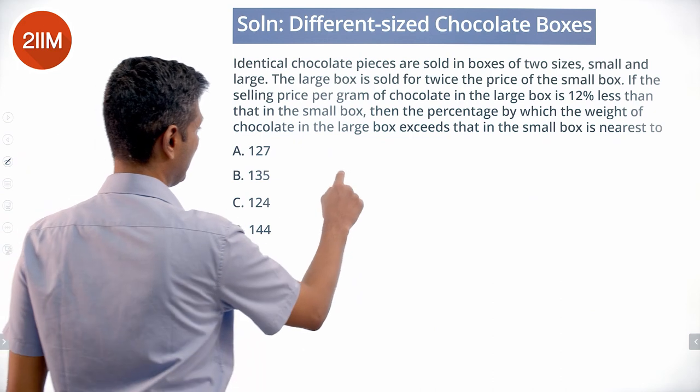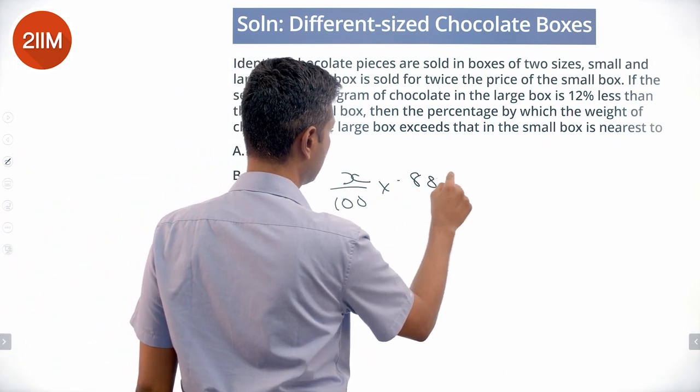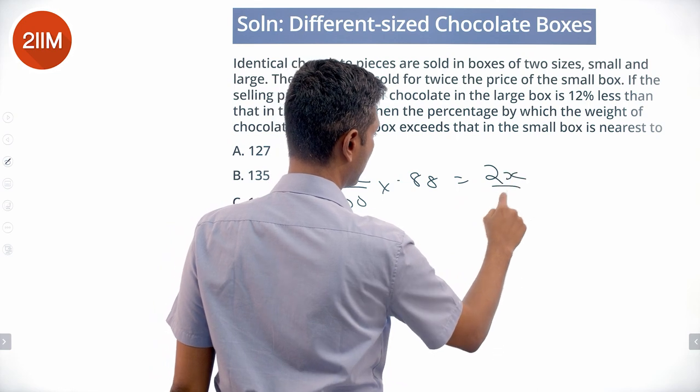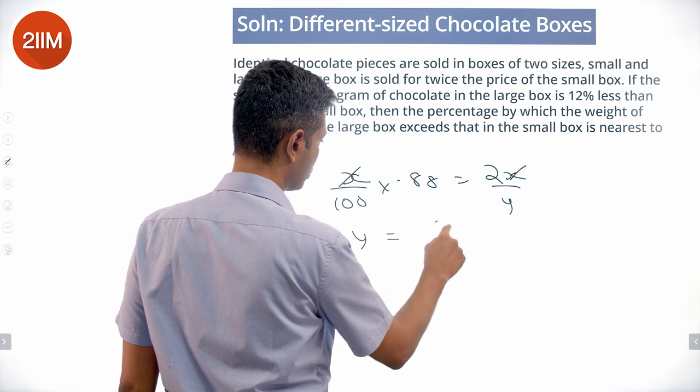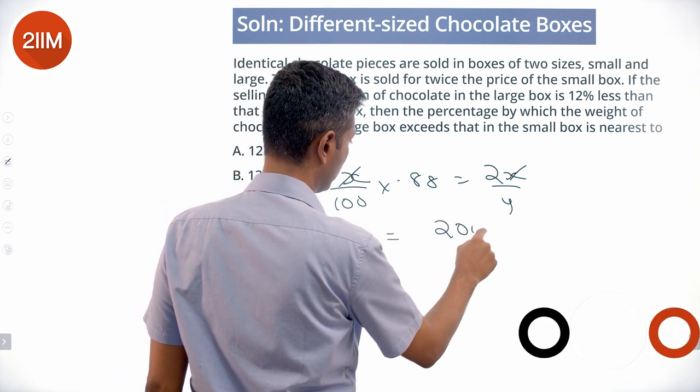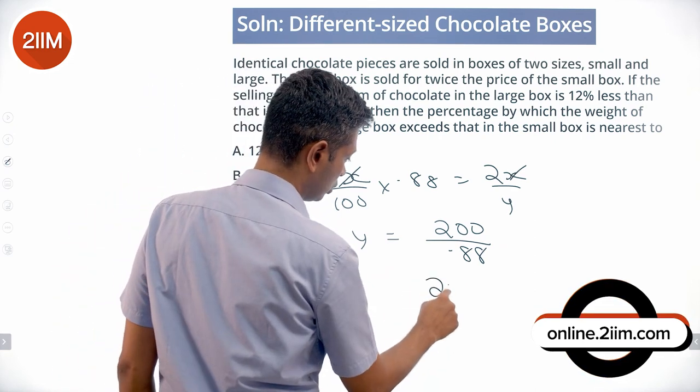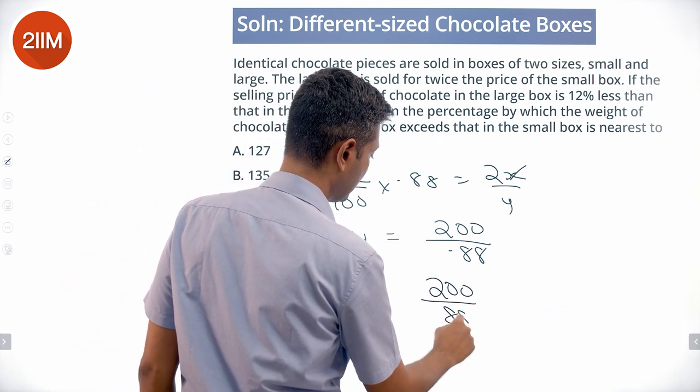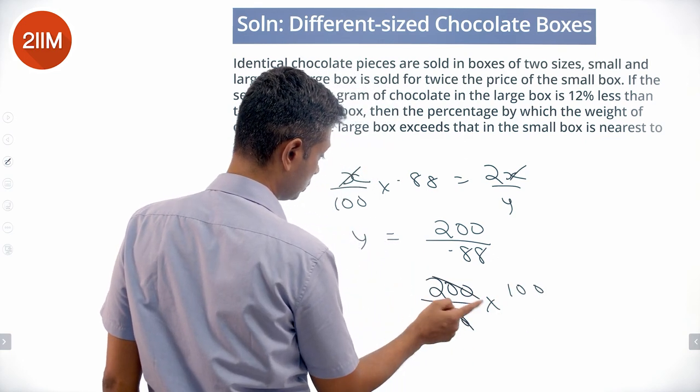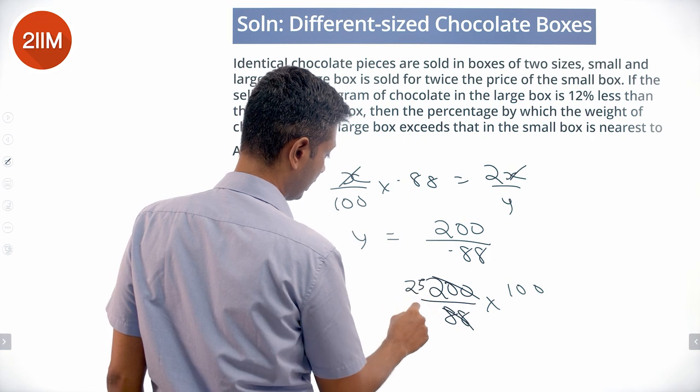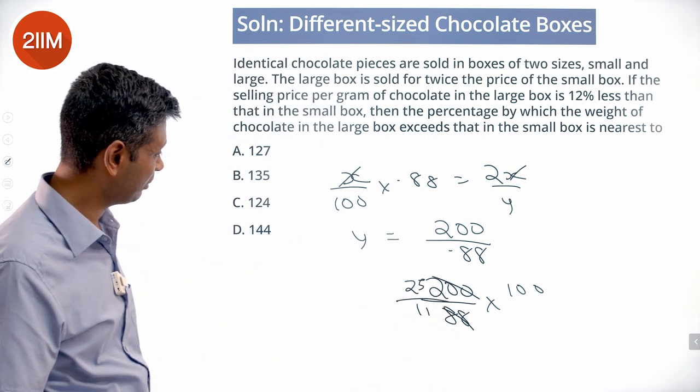We are through. X by 100 into 0.88 is 2X by Y. The X gets knocked off, so Y equals 200 by 0.88, or 200 by 88 into 100. 100 by 44, 50 by 22, 25 by 11. 25 by 11 into 100.